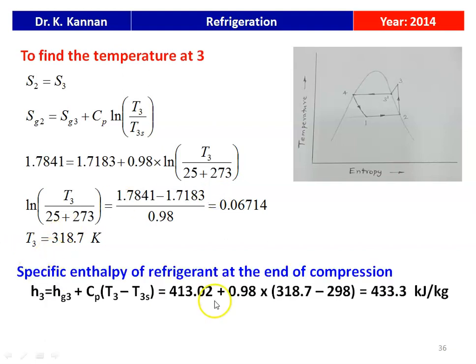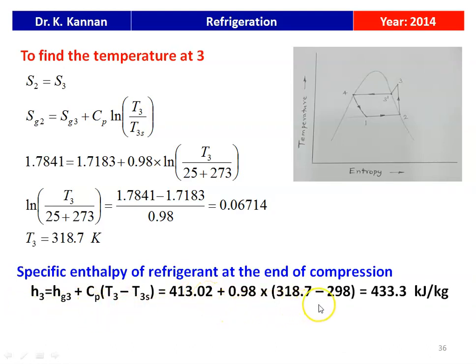Taking the antilogarithm and solving, T3 equals 318.7 Kelvin. The specific enthalpy at the end of the compression process is H3 equal to Hg3 plus Cp multiplied by (T3 minus T3s), which is 413.02 plus 0.98 multiplied by (318.7 minus 298), equal to 433.3 kilo joules per kilogram. The specific enthalpy of the refrigerant at the discharge of the compressor is 433.3 kJ/kg.